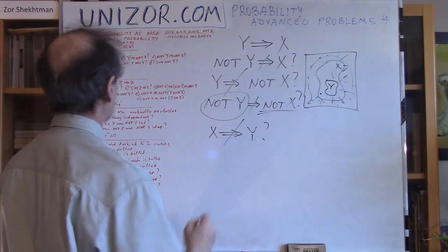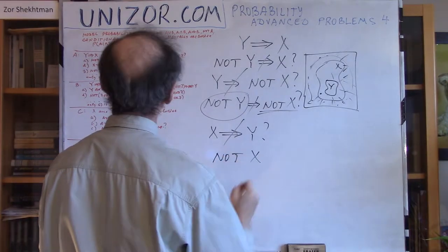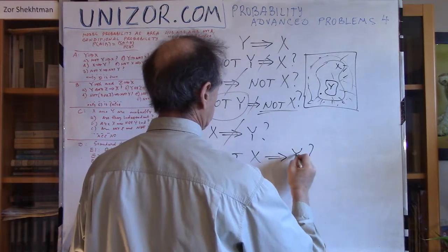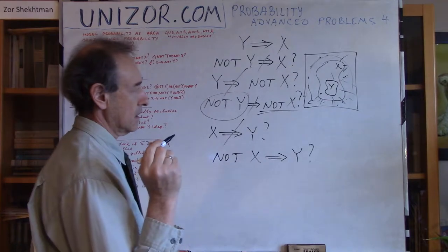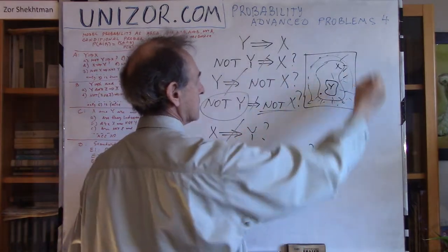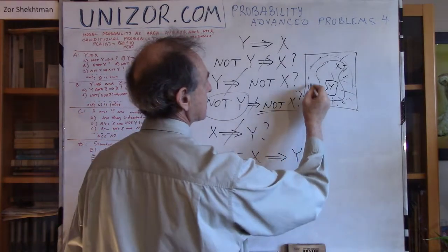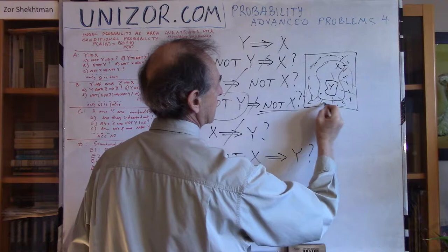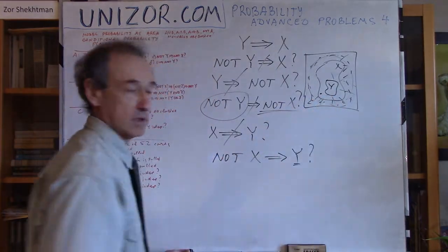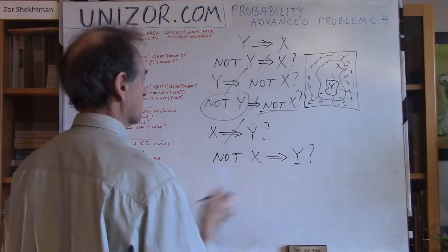NOT X follows Y — again, if I randomly drop the point and NOT X happens, the point is somewhere outside of X. Does it mean it's inside Y? Absolutely not — it's just the opposite. So this is false too.